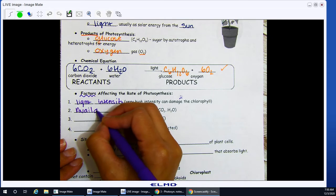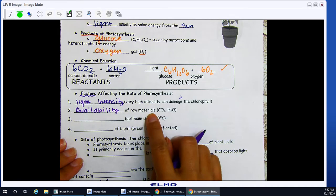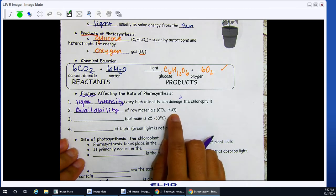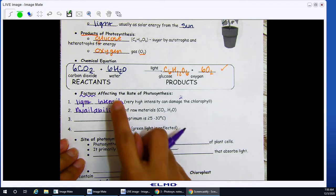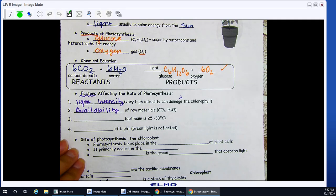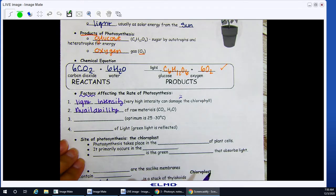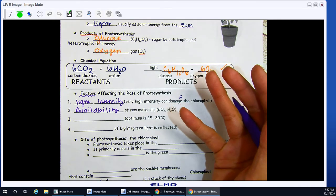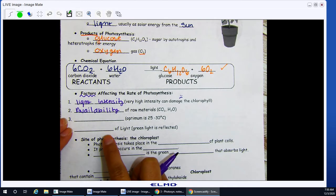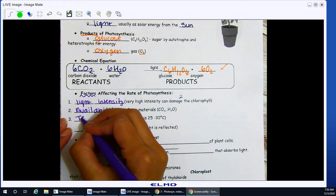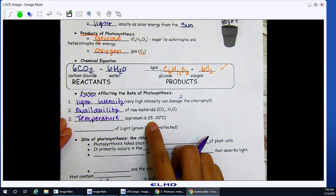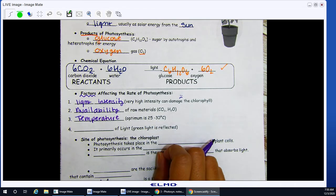Next is availability of raw materials. I need access to carbon dioxide. I need water. Those are my reactants. If I do not have reactants, I cannot make products. Look back to my cake, the cake example. If I don't have my ingredients, cannot make the cake. Next, temperature. Optimum temperature is anywhere between 25 to 30 degrees Celsius.